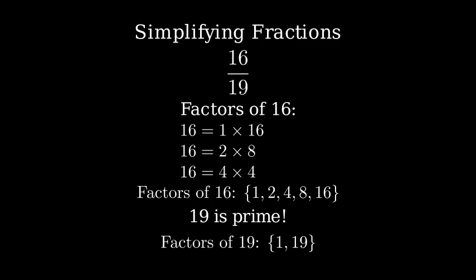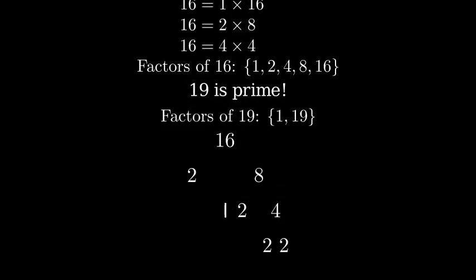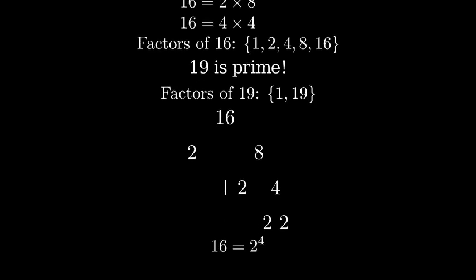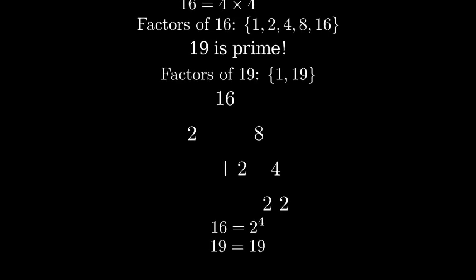Let's visualize this with a factor tree diagram. For 16, we can break it down into its prime factors. The prime factorization of 16 is 2 to the 4th power, and 19 being prime cannot be broken down further.